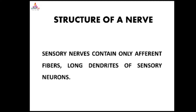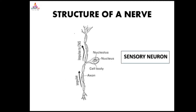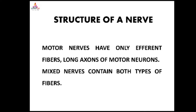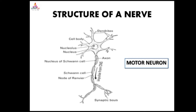Sensory nerves contain only afferent fibers — long dendrites of sensory neurons. Motor nerves have only efferent fibers — long axons of motor neurons. Mixed nerves contain both types of fibers. The motor neuron structure has long axons.